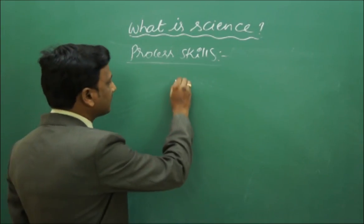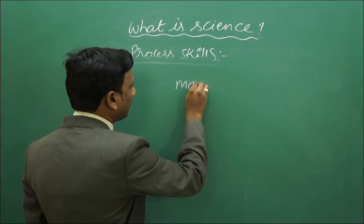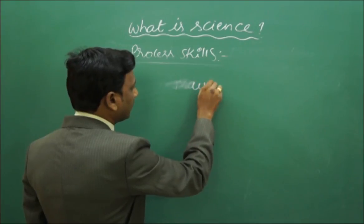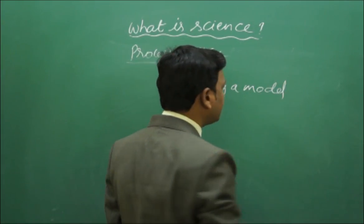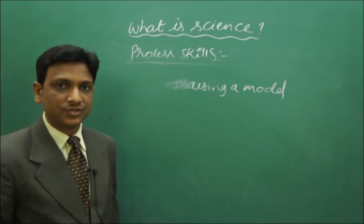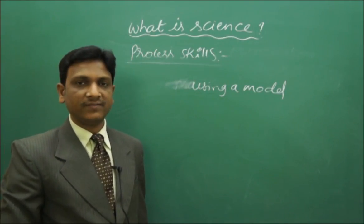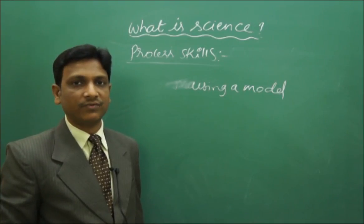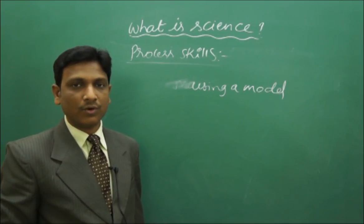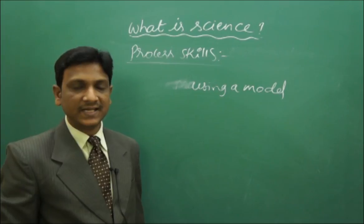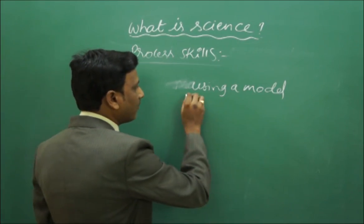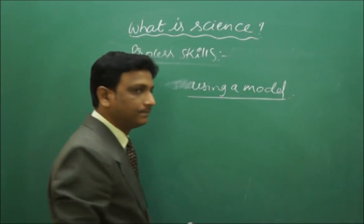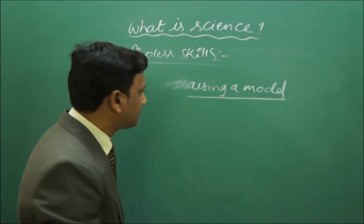Other process skills we see: making a model or using a model. If we go to a science exhibition, we see that so many students will make models. They will try to explain a concept with the help of a model. Models help to study and to present the concept also. Using a model, this model helps to explain the prediction.